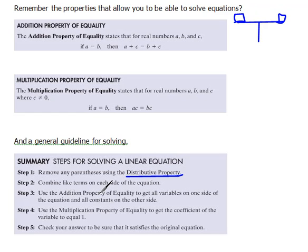Then you're going to start moving things if you need to using the addition property, adding or subtracting anything you want to both sides to move things around, and then the multiplication property so that you can get your variable alone.